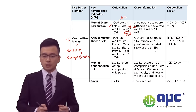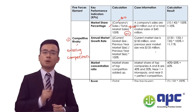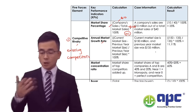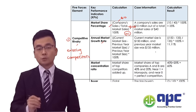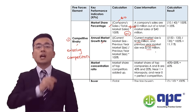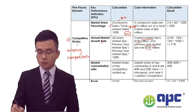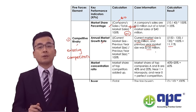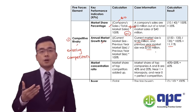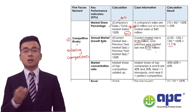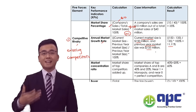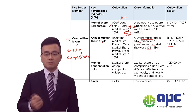We will also monitor the annual market growth rate. For example, the current market size is $150, the previous year was $135. The market has grown by 11.11% — ($150 minus $135) divided by $135. If the market is growing, you can decide whether to enter or leave the market.